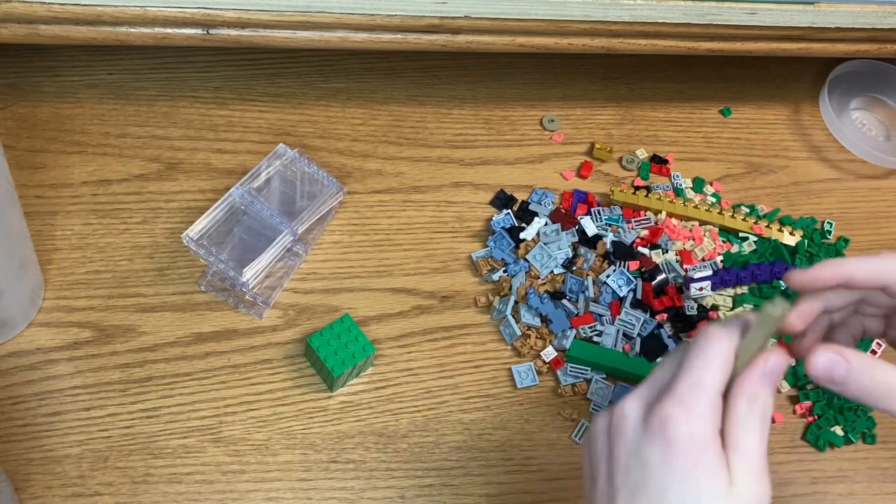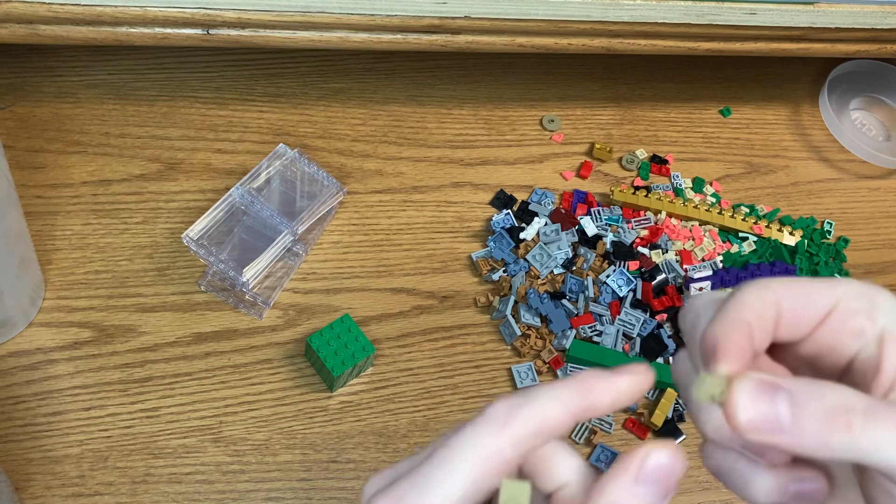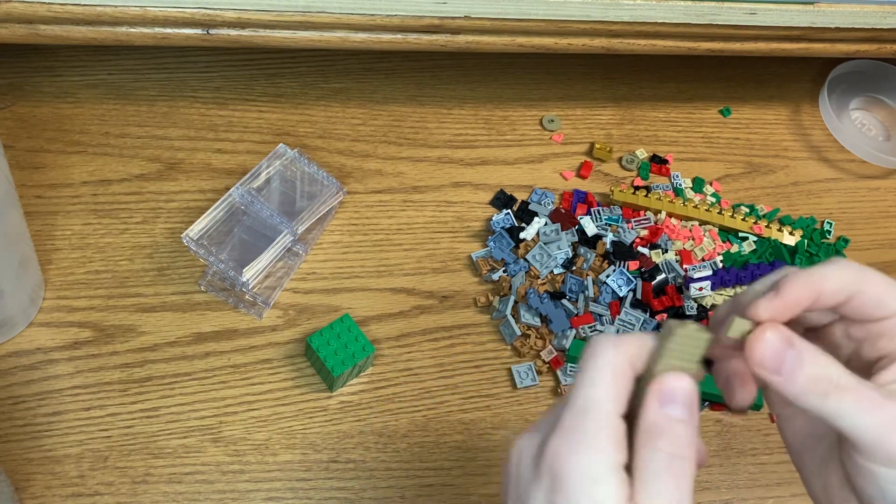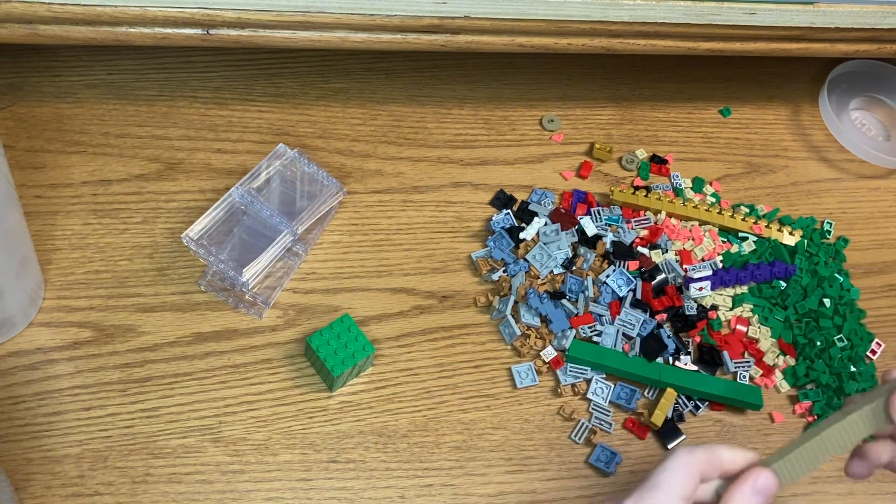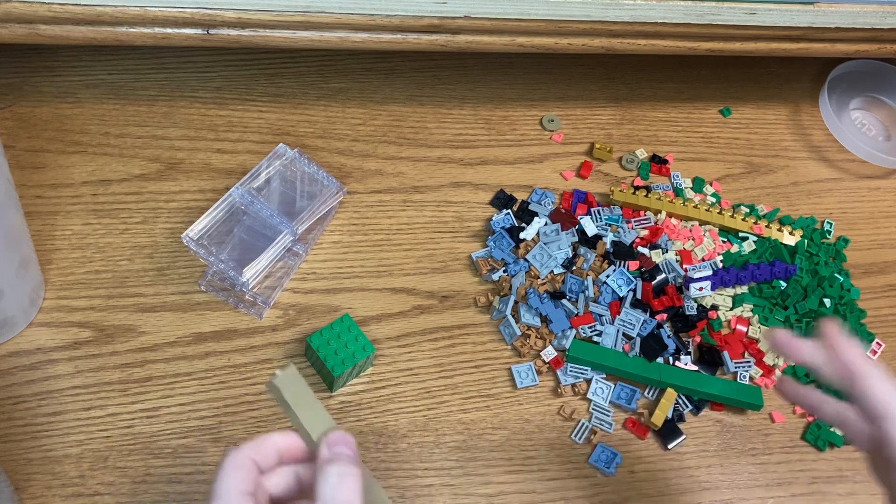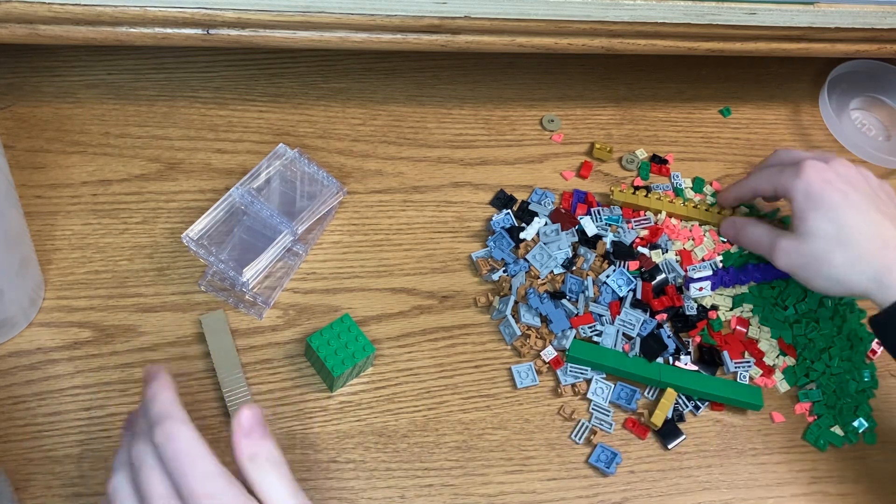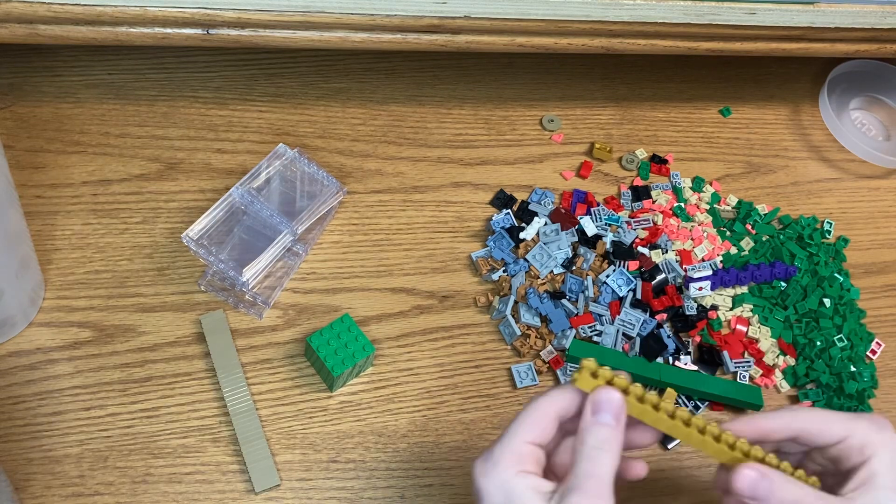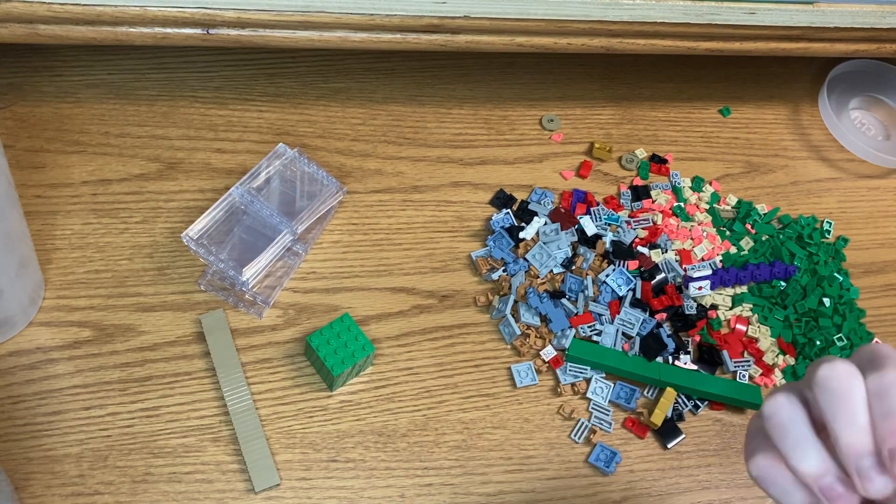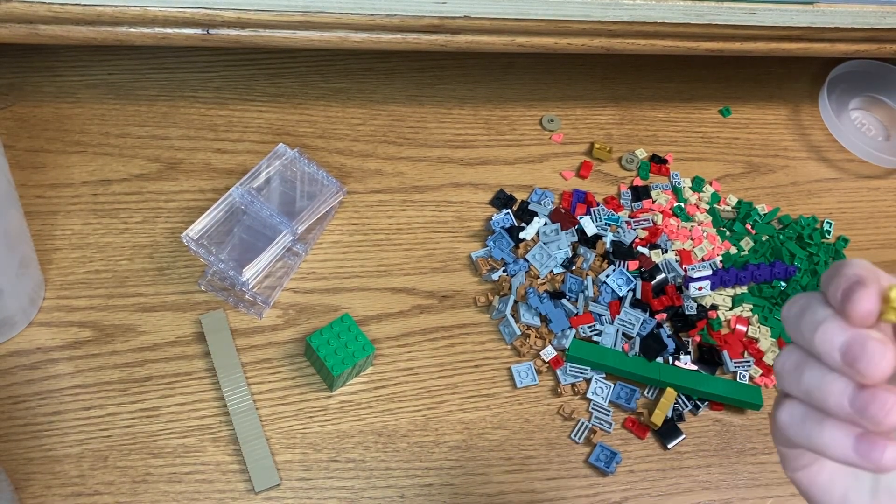And I love these dark tan jumper plates, very good for the city. I do want to make a beach in my city eventually, but I don't know how soon that will be. Got some gold pieces - I don't even know what to call these, modified in some way.